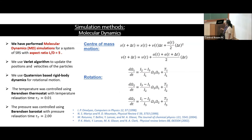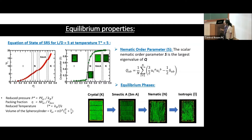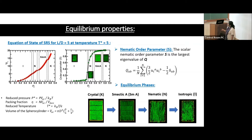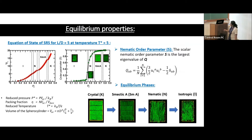Before going to the non-equilibrium steps, let me describe the equilibrium properties. For spherocylinders with aspect ratio five, the equation of state is well-established in the literature: starting from a crystal structure and slowly melting it, you go through different liquid-crystalline structures and eventually reach the isotropic phase. For L/D = 5, starting from crystal you go through smectic, then nematic, then isotropic. These phases are characterized by calculating the nematic order parameter and different pair correlation functions.